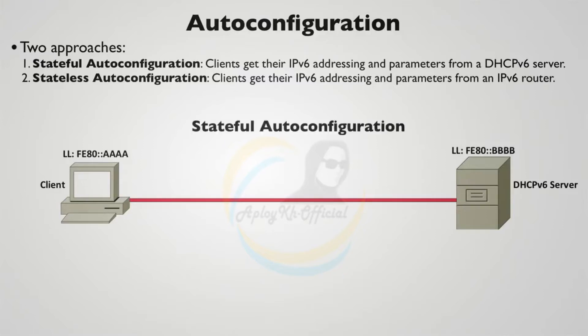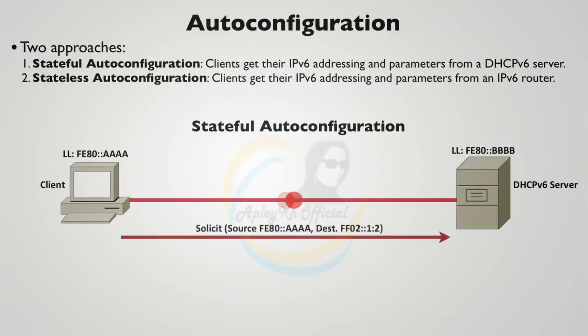Let's take a look at the stateful auto configuration approach, where we're using a DHCP version 6 server. A big difference right off the bat is that IPv6 does not use broadcasts when the initial message is sent out from the client. With IPv4 it was a discover broadcast message. Now it's a solicit multicast message.